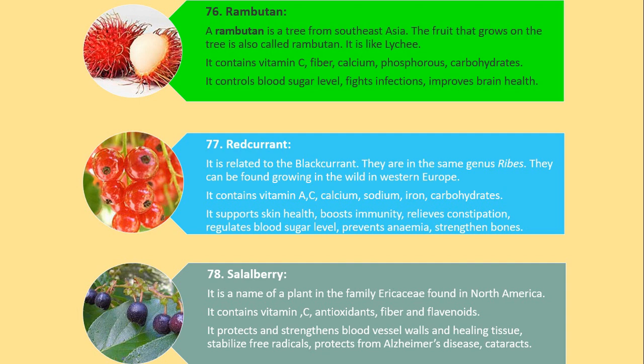Number 77. Red currant. It is related to the black currant. They are in the same genus Ribes. They can be found growing in the wild in Western Europe. It contains vitamin A, C, calcium, sodium, iron and carbohydrates. It supports skin health, boosts immunity, relieves constipation, regulates blood sugar level, prevents anemia, and strengthens bones.